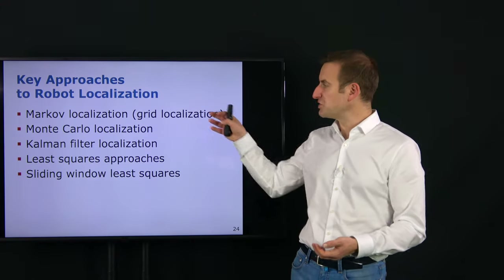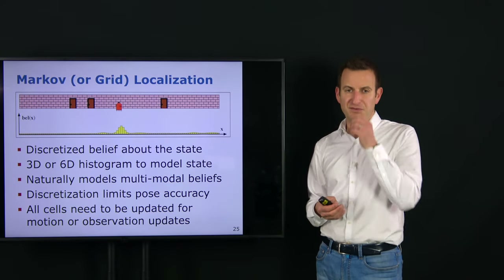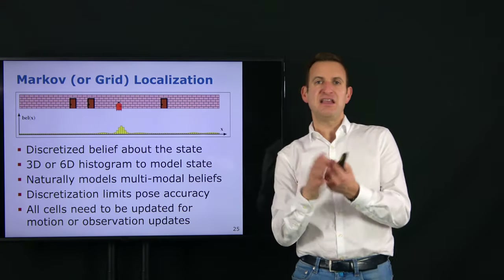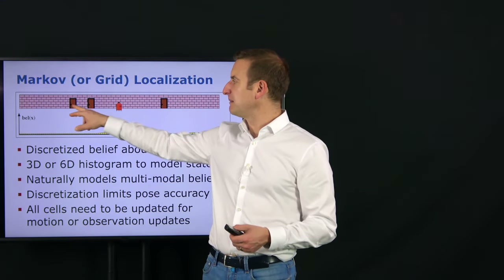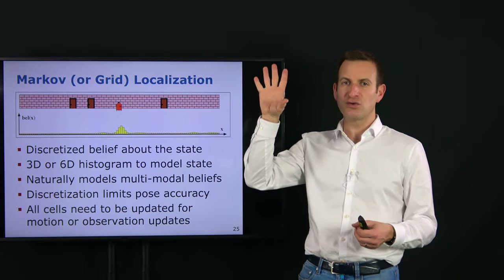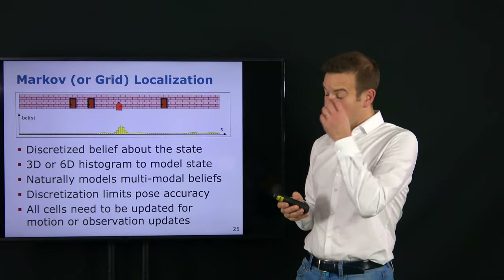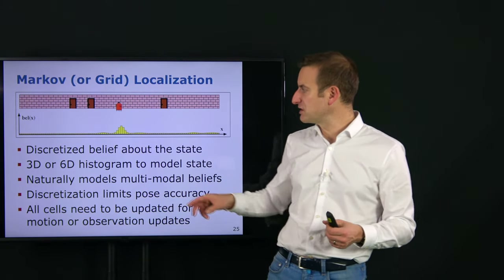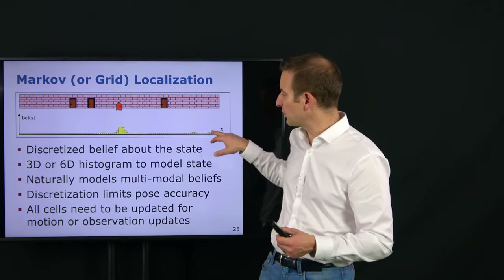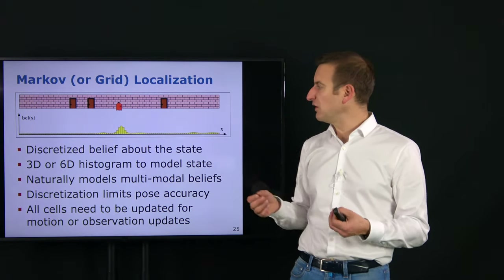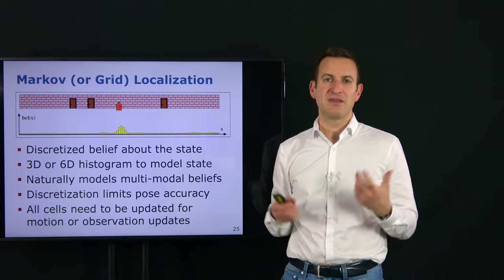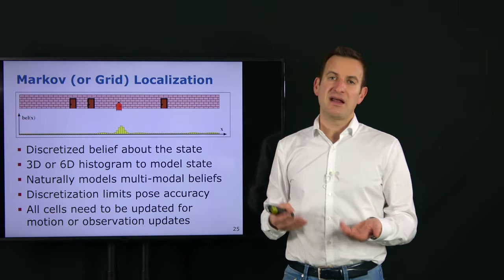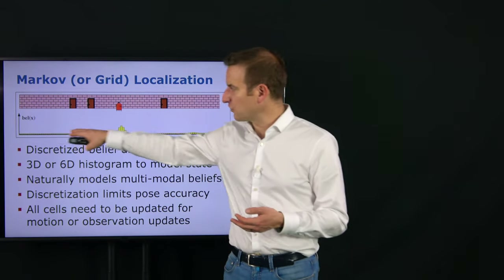In Markov localization or grid localization, the belief about where the platform is is represented with a histogram. Here's a one-dimensional world example: we have a robot that can move through the environment and sense doors. Markov localization uses a histogram to estimate what probability the robot is within a certain small interval — say, within a 5-centimeter region. The environment is discretized into 5-centimeter cells, and we estimate the probability that the robot is in each cell. In a 2D world, this would be a 2D histogram; adding orientation gives a 3D histogram with X, Y, and heading theta.